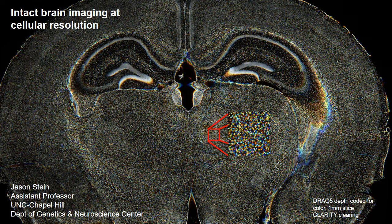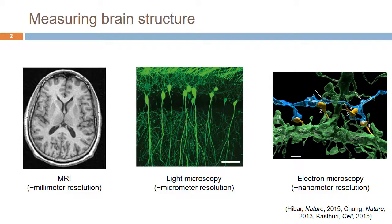This is an example image — not a human brain, but a mouse brain. The top is the top of the brain, the bottom is the bottom, and it's what we call a coronal slice. Each of these individual dots is a nucleus, indicating that there is a cell there, and they're color-coded by depth in the slice. This gives you an idea of just how many cells there are in the brain.